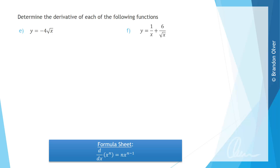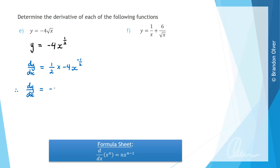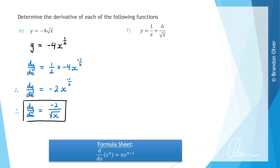For part E, we again need to express x with a power. We rewrite the rule as y equals negative 4 times x to the power of one half, since the square root of x is the same as x to the half. Now we calculate dy/dx: we take the power of a half out to the front, and subtracting 1 from a half gives negative a half. So dy/dx equals a half times negative 4, giving negative 2x to the power of negative one half, which can also be written as negative 2 divided by the square root of x. That is the answer for part E.